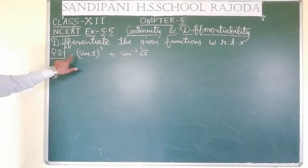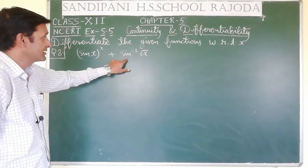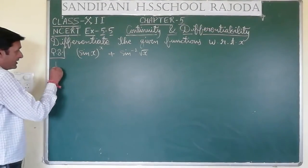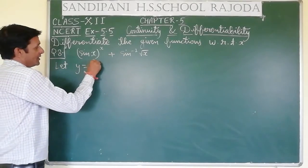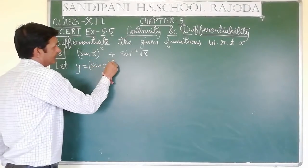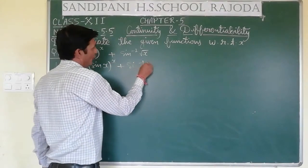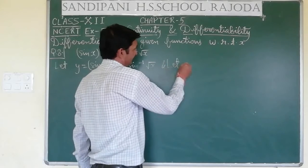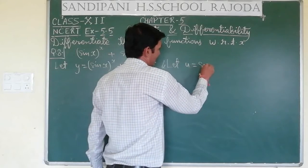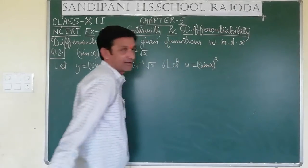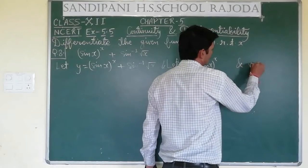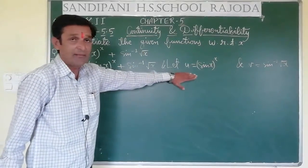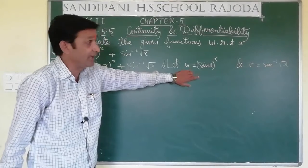Now see Question number 8. It is: sin x raised to the power x plus sin inverse of root x. Here we consider sin x raised to the power x separately. Let y equal to sin x raised to the power x plus sin inverse root x. Let u equal to sin x raised to the power x, and v equal to sin inverse root x.